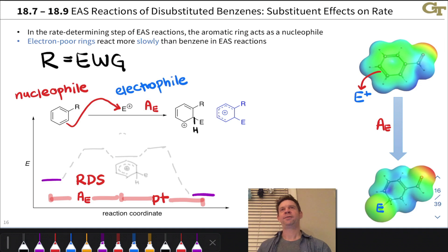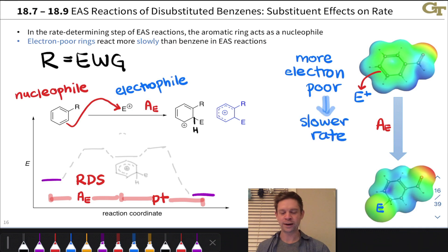Now we want to ask, if I start with benzene which just has an H where this R is located, and I replace that H with an electron-withdrawing R group, what happens to the rate of this A sub E step, which is rate-determining? Well, I've made the ring more electron-poor. That makes it a worse nucleophile, and that is its role in the slow step, in the rate-determining step. So making the ring more electron-poor will slow the rate by making the ring a worse nucleophile.